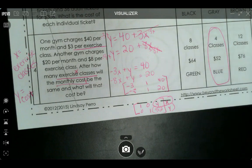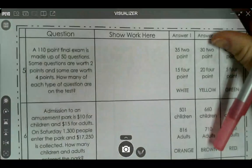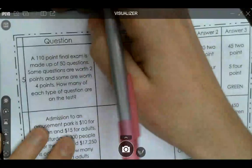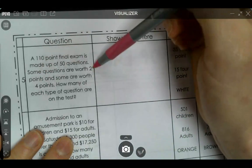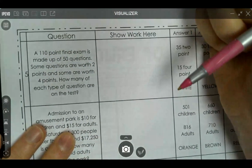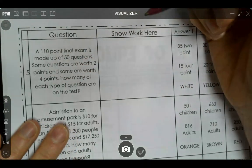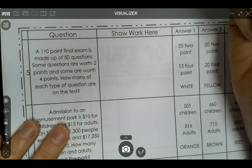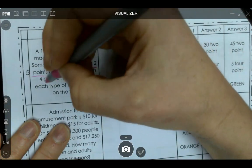That's the only one like that, but we are going to do number 5 together also. A 110-point final exam is made up of 50 questions. Some questions are worth 2 points and some are worth 4 points. How many of each type of question are there? The way you know what your variables are is you look at the question. It says how many of each type of question are on the test. The two types are the questions that are worth 2 points and the questions that are worth 4 points.